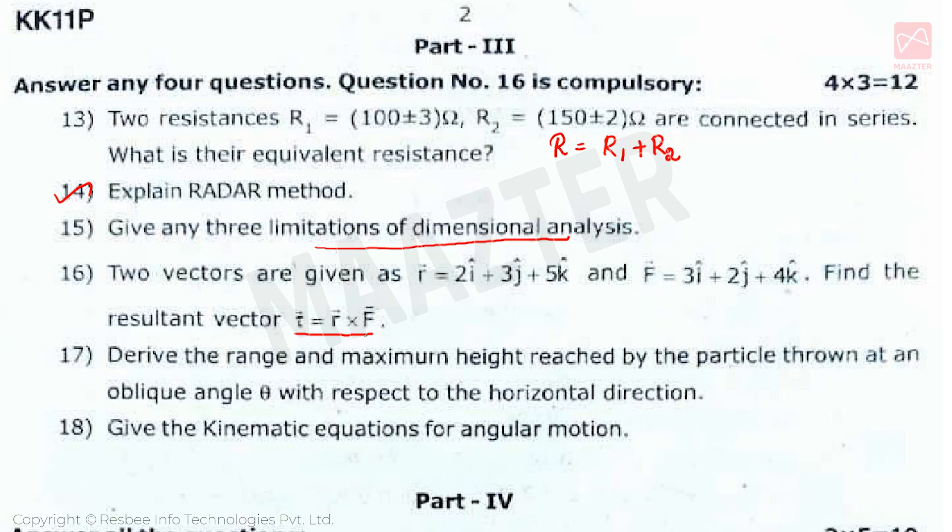Next question is: Derive the range and maximum height reached by the particle thrown at an oblique angle theta with respect to the horizontal direction. This is projectile motion under angular projection question. You must explain horizontal range and maximum height. Next question: Give the kinetic equations for angular motion. This is second unit question. For angular motion, write 4 kinetic equations.